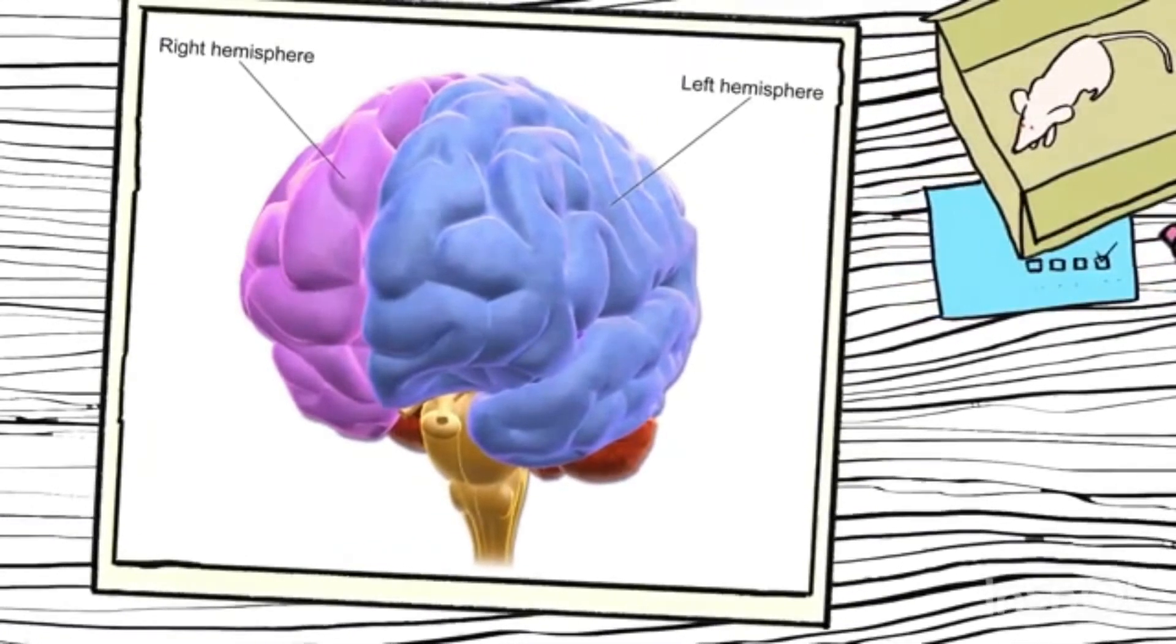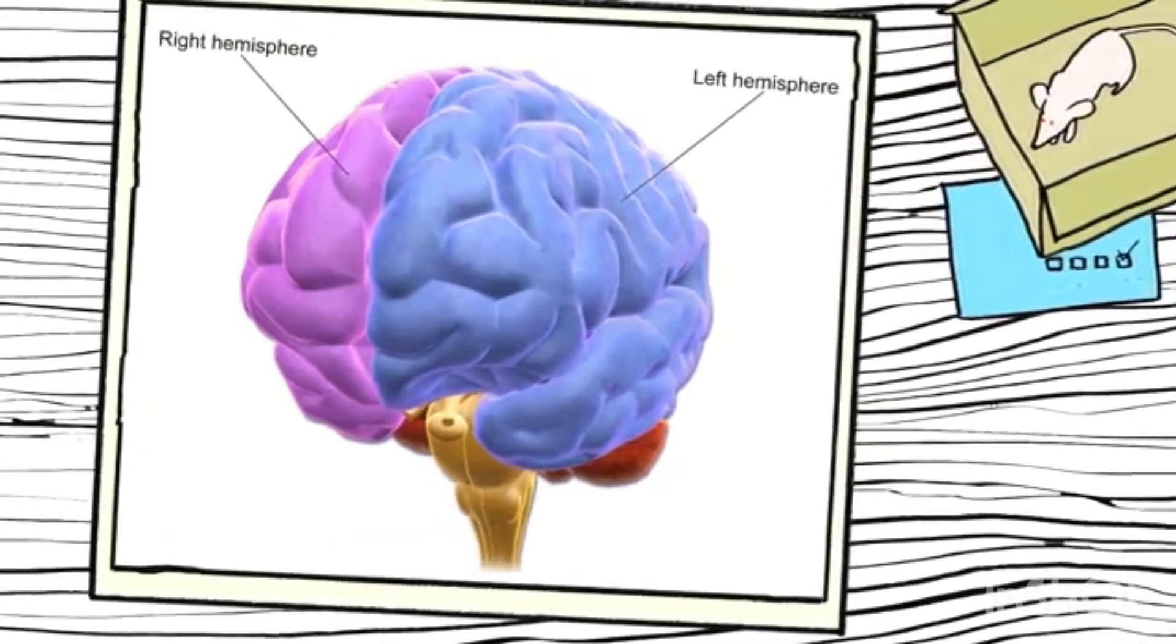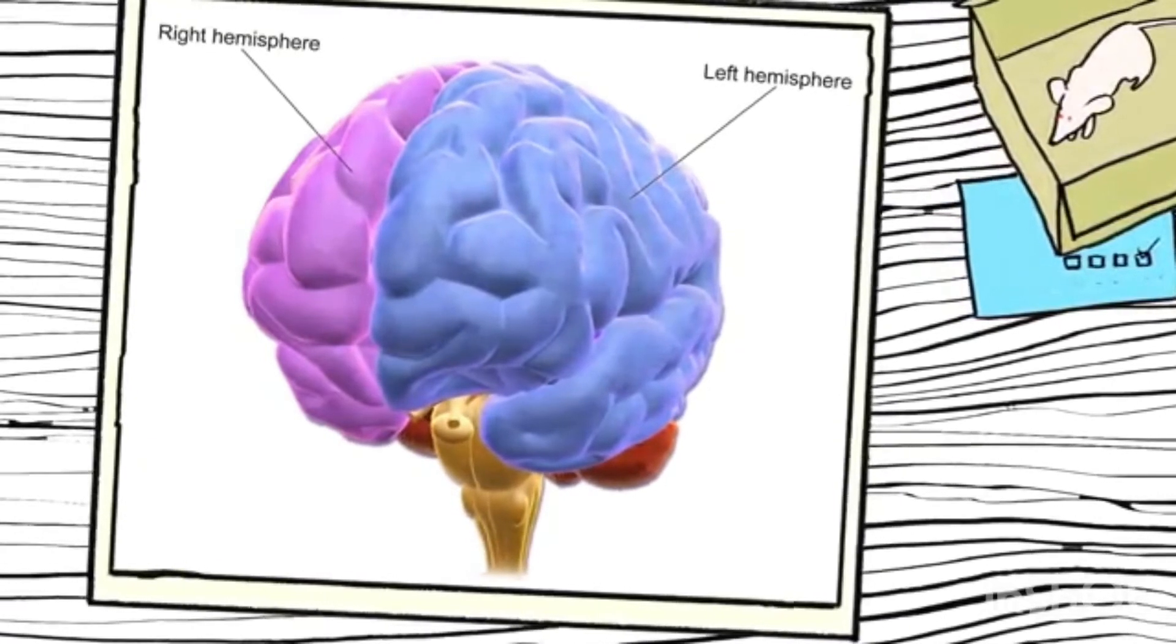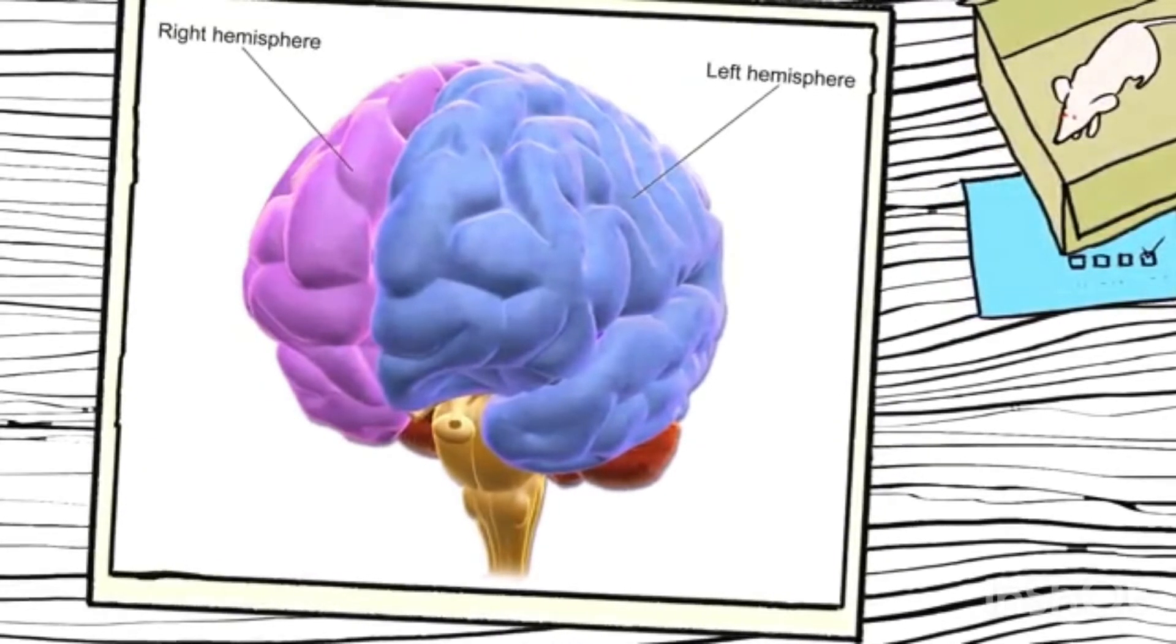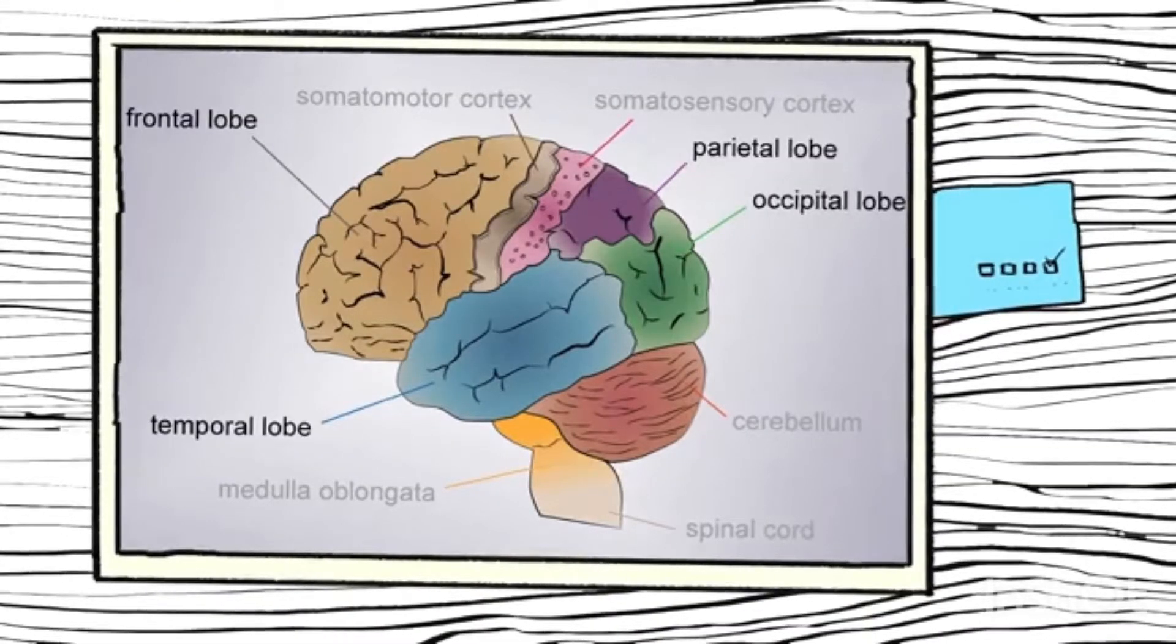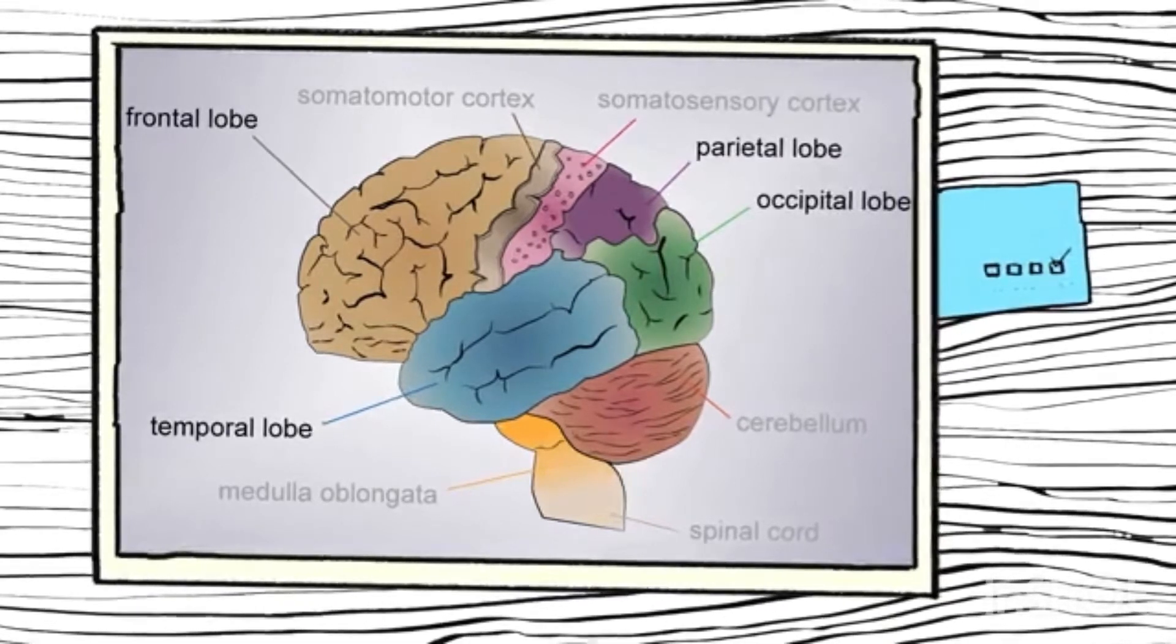Another thing about the cortex that's super interesting is that it includes maps. What I mean by this is it includes topographical maps, where two things that are close together in the brain are similarly close together in the body.